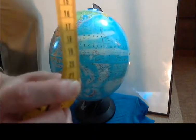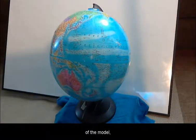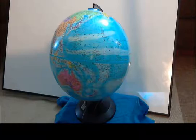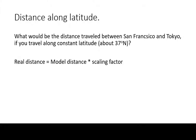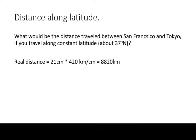When we do that, we get an approximate distance on the model of 21 cm. We set up our equation relating real distance to model distance and the scaling factor. We plug in and get that traveling this way would be 8820 km.